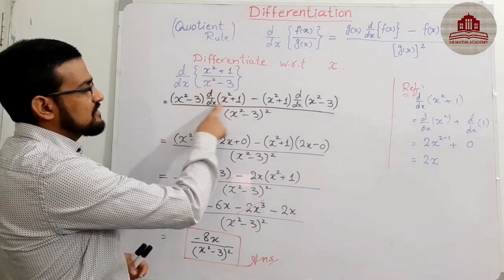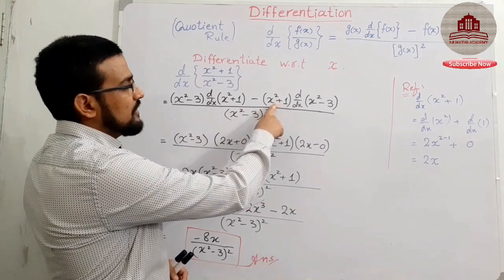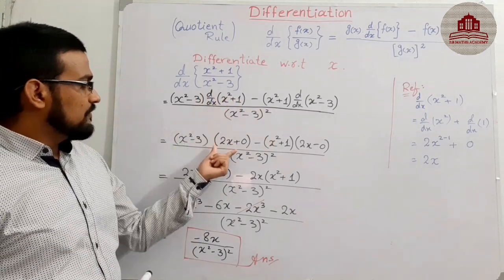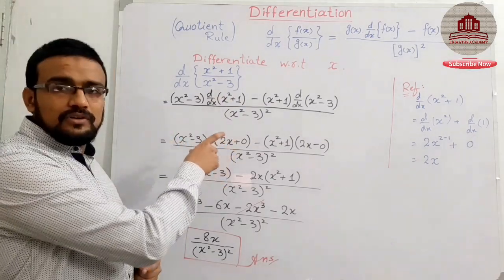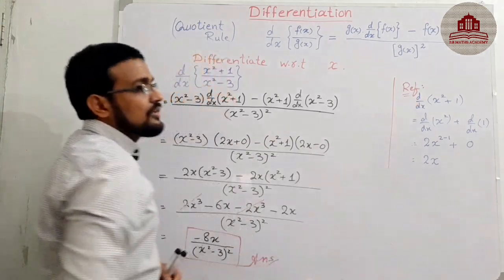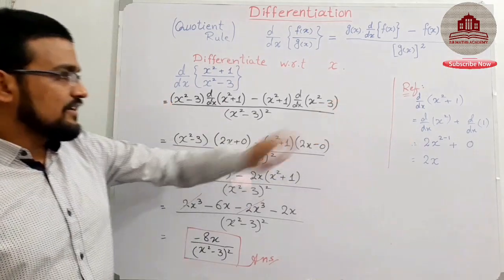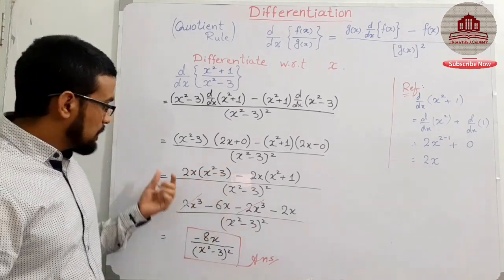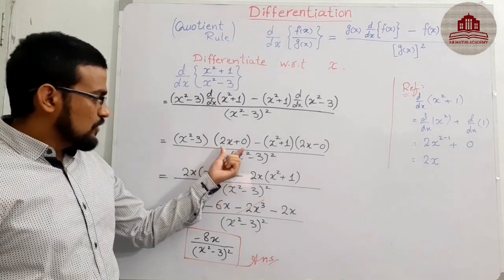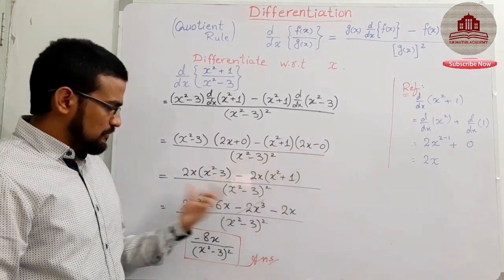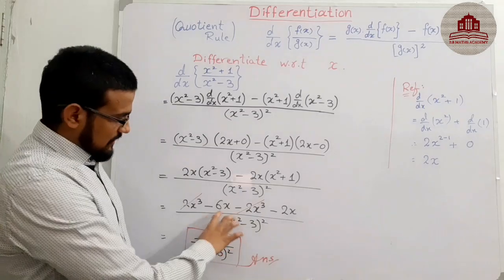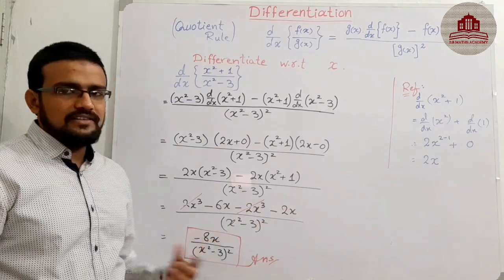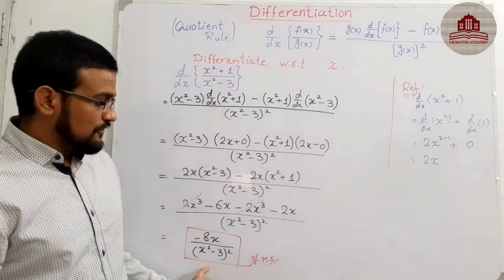These two functions are in the form of a quotient — apply the rule: first denominator as it is, then the derivative of the numerator, minus the numerator as it is, and the derivative of the denominator, all divided by the square of the denominator. The derivative of x² + 1 was discussed in the previous lecture — the link is in the description. Moving on: 2x + 0 = 2x. Similar to the previous question, multiply and simplify: 2x³ minus 2x³ cancel each other, and minus 2 minus 6 equals minus 8x. The final result is minus 8x over (x² − 3) whole square.